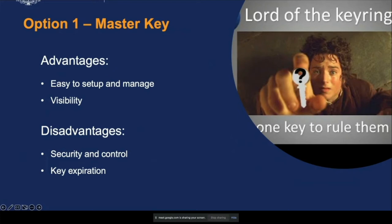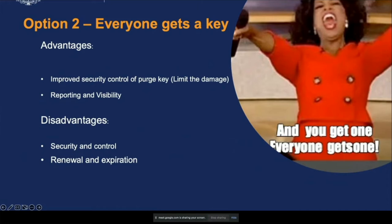Option two - everyone gets a key. You generate individual API keys and distribute them. This limits the damage - one key goes to one site so they can only purge content for that site, and gives clear reporting. The disadvantages are again security and control - we don't know how those keys are being used, and renewing and expiring 300 keys is a big management overhead.